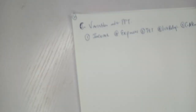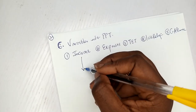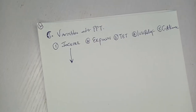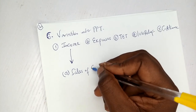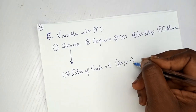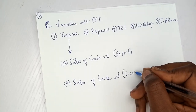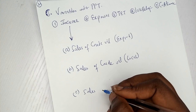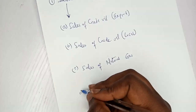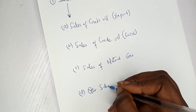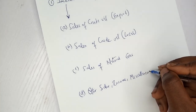Now to the variables under PPT — specifically income. In the upstream sector, income consists of: (A) sales of crude oil exports, (B) sales of crude oil local or domestic, (C) sales of natural gas, and (D) other sales, other income, miscellaneous income, or incidental income — whatever it may be called.